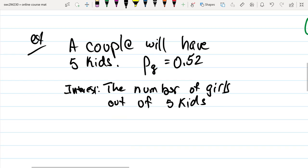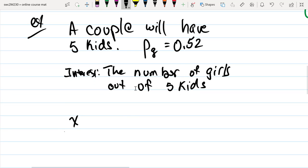That's a random number, and as we commonly do, we'll use X as a variable. It could be all boys, one girl, two, three, four, or five girls. So there are six different options, even though there are only five kids.